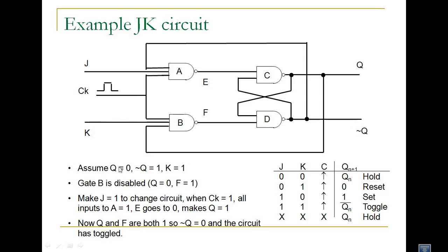For the JK flip-flop: assume Q=0 and Q-complement=1, and K=1 — gate B is disabled because Q=0. When CK=1, E goes to zero making Q=1, so Q-complement becomes zero — the circuit has toggled. At 0-1 the output is reset, at 1-0 the output is set, at 1-1 the output toggles, and at 0-0 the output holds its previous value.